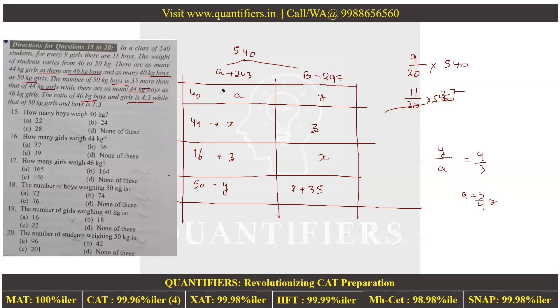The ratio of 50 kg girls and boys is 1:3. So y/(x+35) = 1/3, which means x + 35 = 3y, so x = 3y - 35.